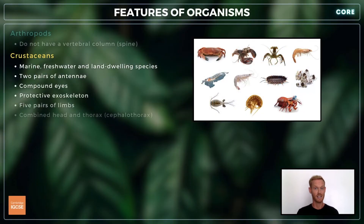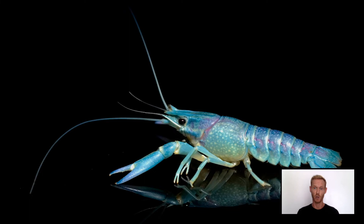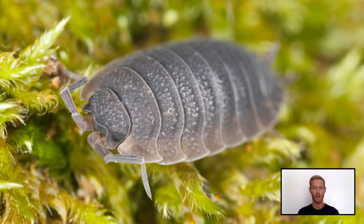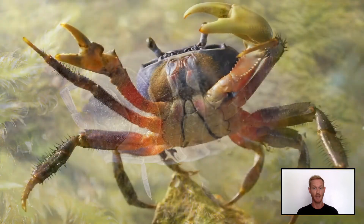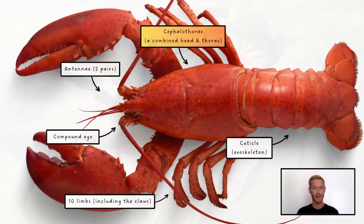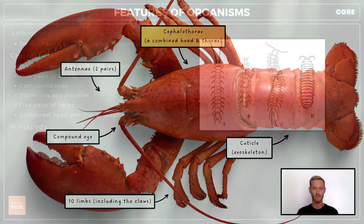Crustaceans are a diverse class of arthropods that include marine, freshwater and land-dwelling species. They're characterized by two pairs of antennae, compound eyes, an exoskeleton that forms a hard covering over most of the body, and a pair of jointed limbs attached to each segment. Like arachnids, crustaceans have a combined head and thorax.